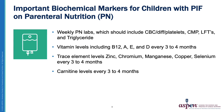The important biochemical markers for children with pediatric intestinal failure on TPN are listed below, which include weekly parenteral nutrition labs. These should include a CBC with differential and platelets, a CMP, LFTs, and triglyceride levels. Vitamin levels and trace element levels should be obtained around every three to four months and should include B12, A, E, and D.